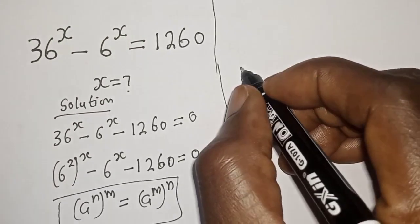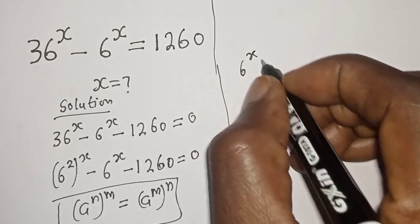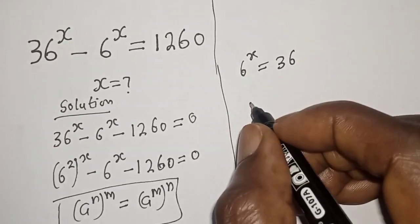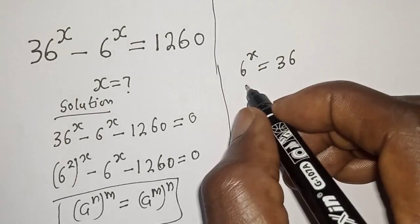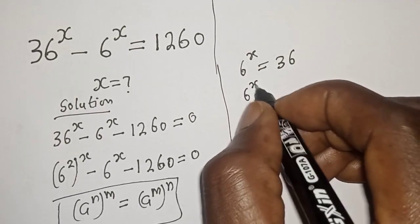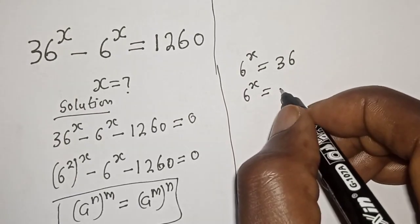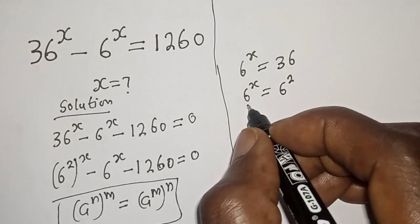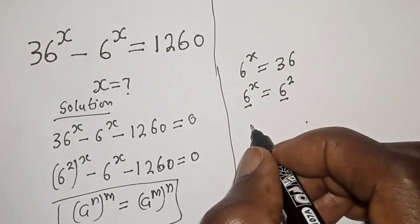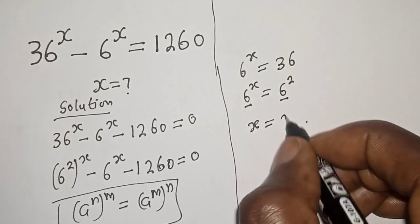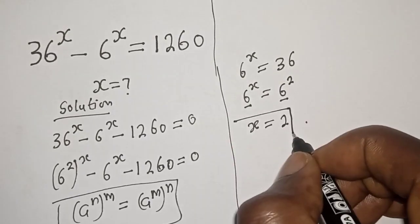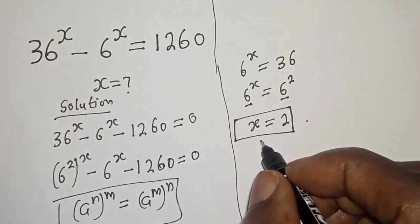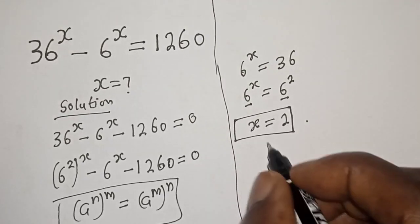Now we have 6 raised to power s equals 36, and 36 is 6 squared. We have the same base on both sides, therefore s equals 2. This is the final answer. Let's check to confirm if our answer is right or wrong.